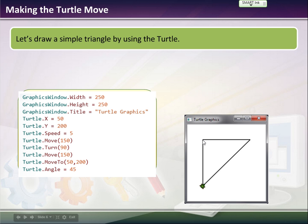So, it starts here and moves up 150. Then we turn right and move 150 this way. And now we want to go back to our original location. So, from there, we would say move to 50, 200, which is, by the way, where we started. And then, for good measure, we turn the turtle to face a 45-degree angle. So, if this is 0 and this is 90, the turtle would face this way.